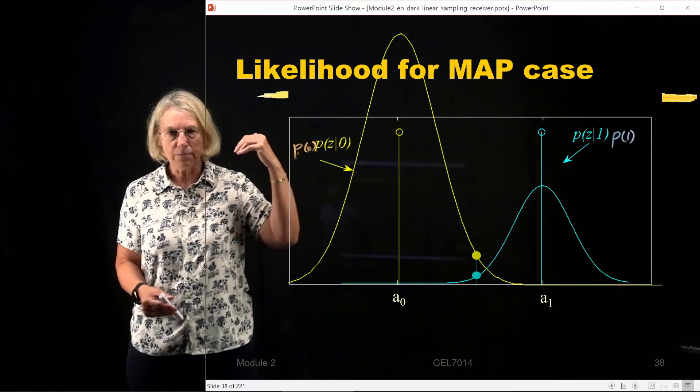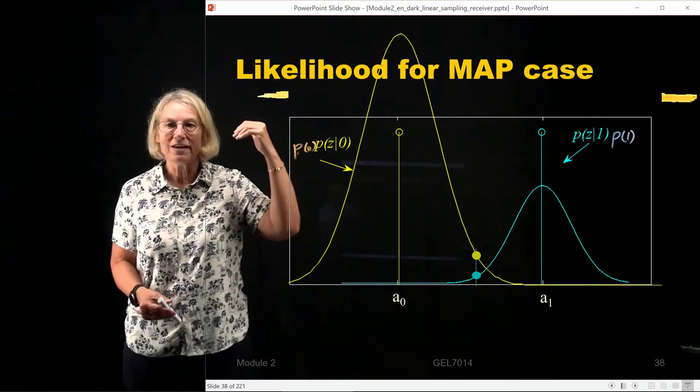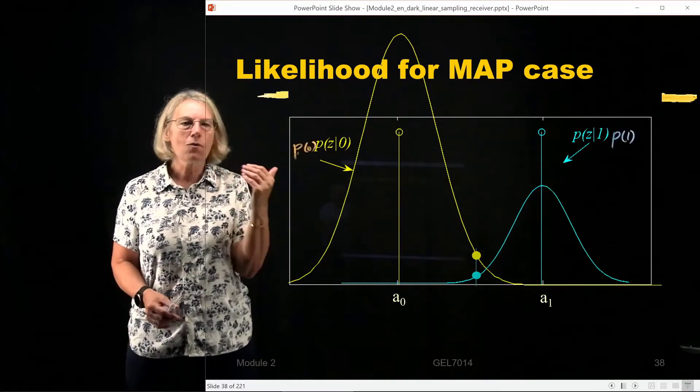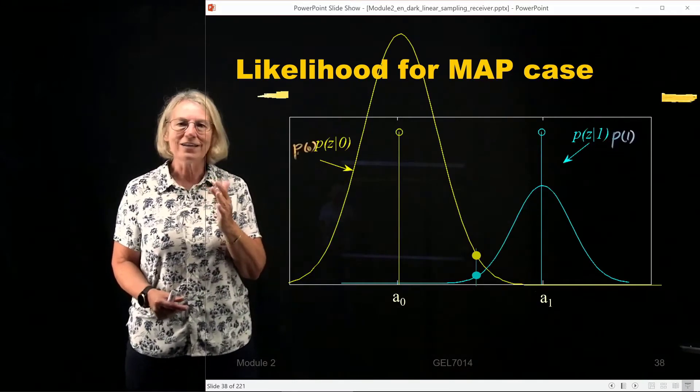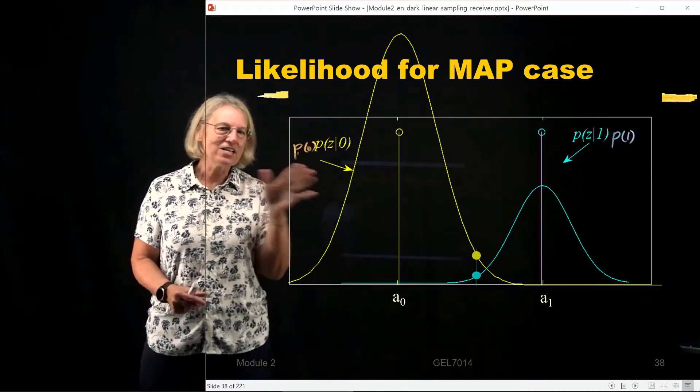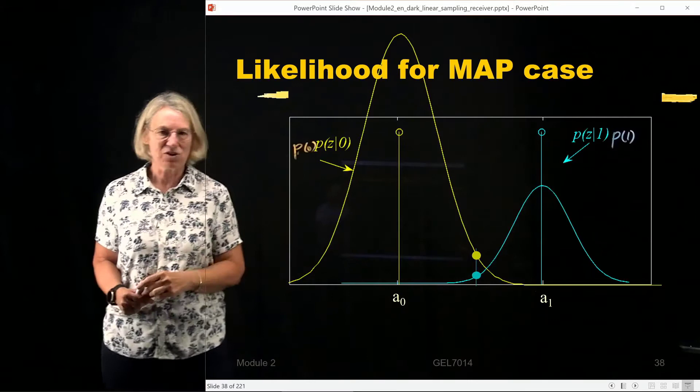So the a priori information pushes me to tend to think, even though I'm on the wrong side of the midpoint, 0 is so much more likely, I'm going to hedge my bet and say that a 0 was sent anyway.